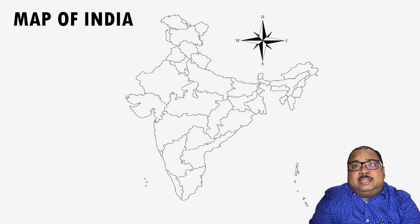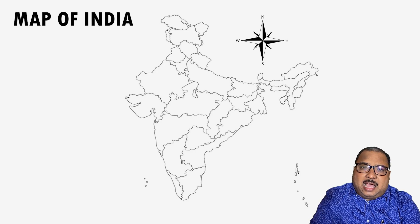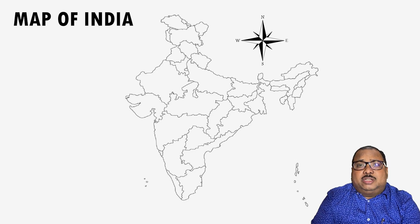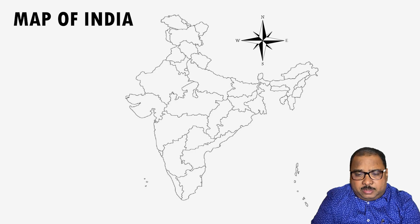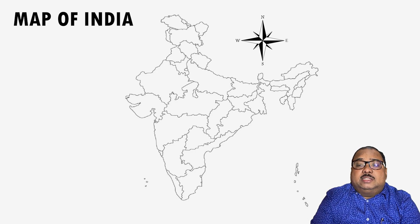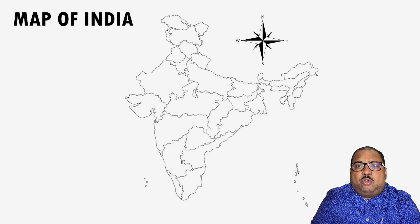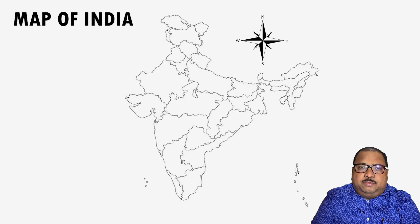Many important cities of India like Kanpur, Varanasi, Allahabad, Patna, Kolkata etc. are situated on the bank of this holy river. Let us now discuss the entire journey of Ganga from its source to the sea, and also about the numerous distributaries and tributaries of this river on both its sides.